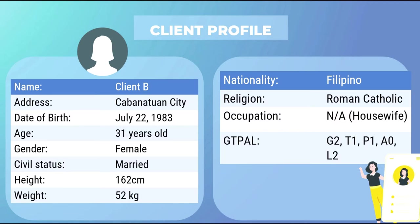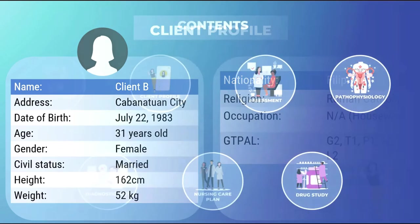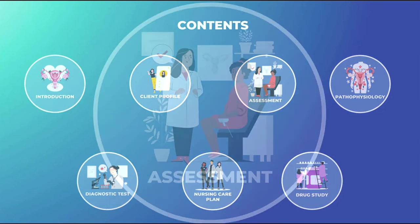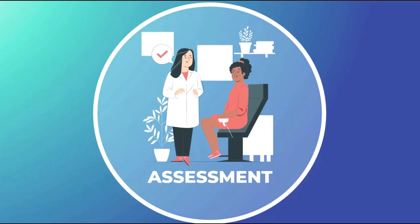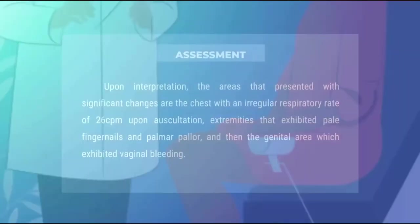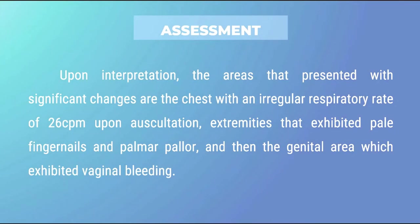GTPAL: G2, T1, P1, A0, L2. For the physical examination, upon interpretation, the areas that presented with significant changes are: the chest with an irregular respiratory rate of 26 cycles per minute upon auscultation; the surgical site from the abdomen is bleeding; and the extremities that exhibit pale fingernails and palmar pallor.